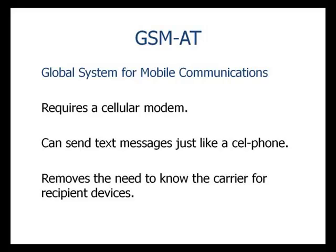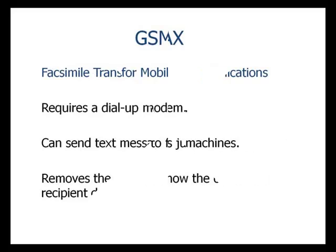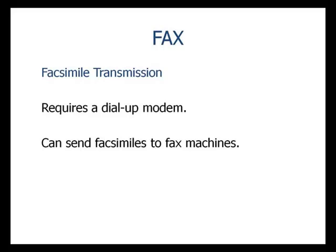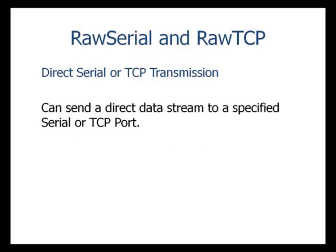This removes the need to know the carrier for the devices you wish to reach. The fax protocol allows PageGate to send a facsimile transmission, just like a fax machine. The final two protocols, RAW Serial and RAW TCP, allow PageGate to perform a data dump to a serial or TCP port.